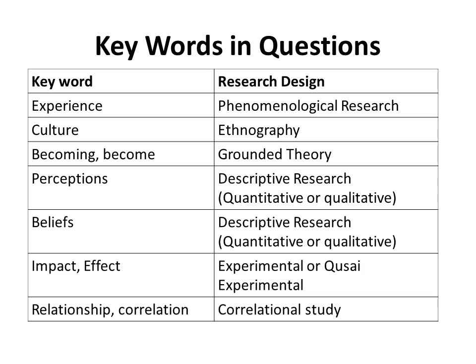If there is a word 'culture,' then ethnography will be appropriate. If you find words like 'becoming' or 'become' — words which give a sense of process — you will be applying grounded theory research design. The words 'perceptions' or 'beliefs' are commonly used in educational research and both can be investigated through descriptive research. There are two kinds of descriptive research: quantitative and qualitative. The researcher may opt for either depending on their worldview or research paradigm.